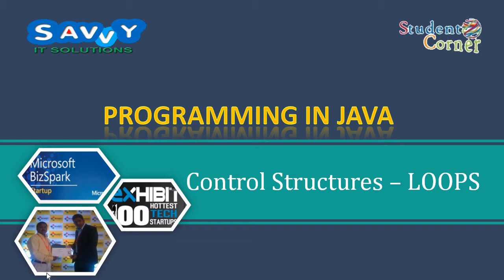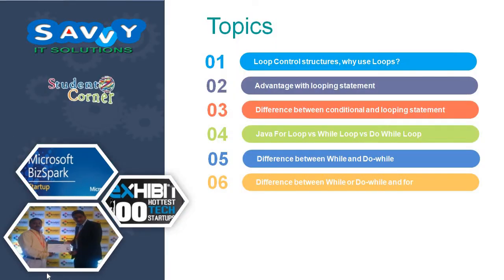Initially we are giving only basic input related to loop control structures. So what we discuss in this video includes: loop control structures, why use loop control structures, advantages with loop control statements, difference between conditional and loop statements, Java for loop, while loop and do-while loop, with small comparisons.